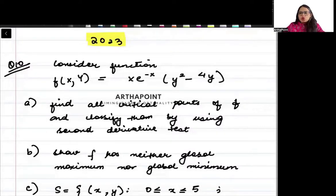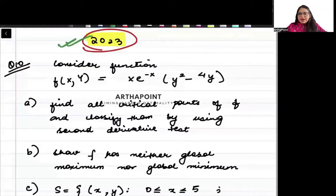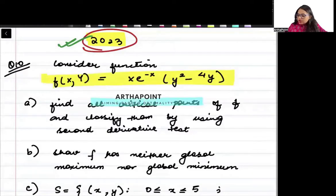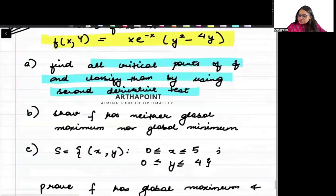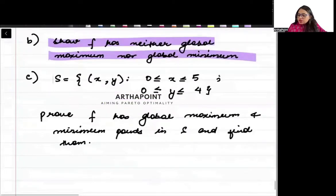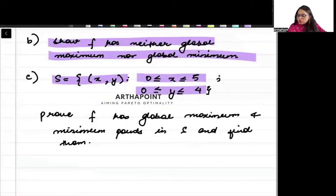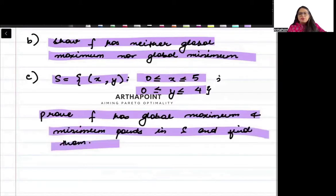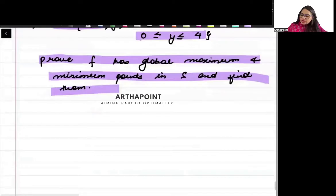I will go ahead and take question number 10 of the 2023 paper, intermediate MME. The question says: consider the given function, find all critical points, classify them using the second derivative test, show that f has neither a global maxima nor global minima. You are given a set S where x is between 0 and 5 and y is between 0 and 4 — prove f has global maxima or minima points in S and find them.